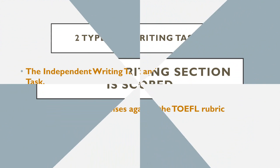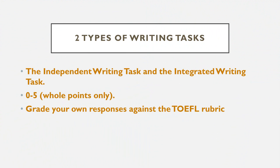How the writing section is scored. In the writing section there are two writing tasks: the independent writing task and the integrated writing task. Each is given a score from 0 to 5, full points only. Like speaking, for writing you will need to grade your own responses against the TOEFL rubric. But this section is often easier since you'll have your essay right there to look over as you're grading yourself. You can have another person grade you and you can also review sample essays and their scores to get a better idea of what graders look for.